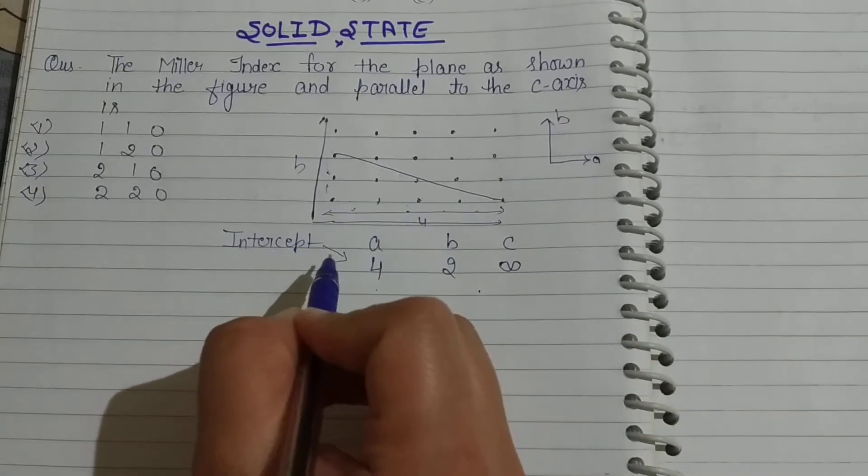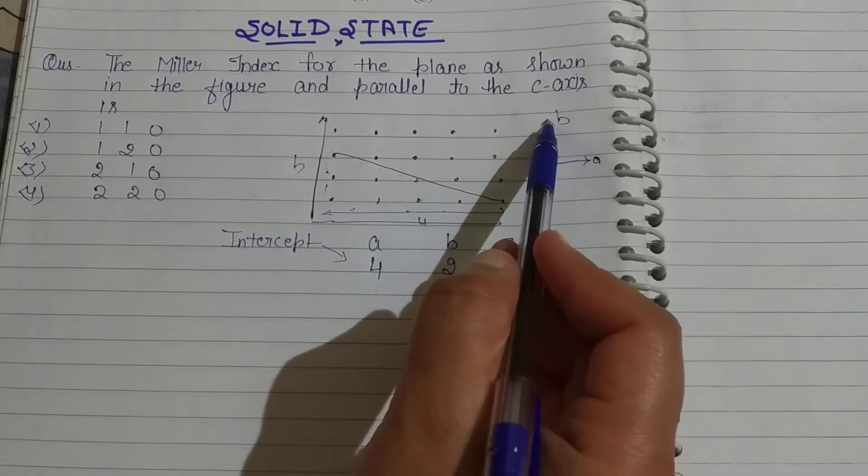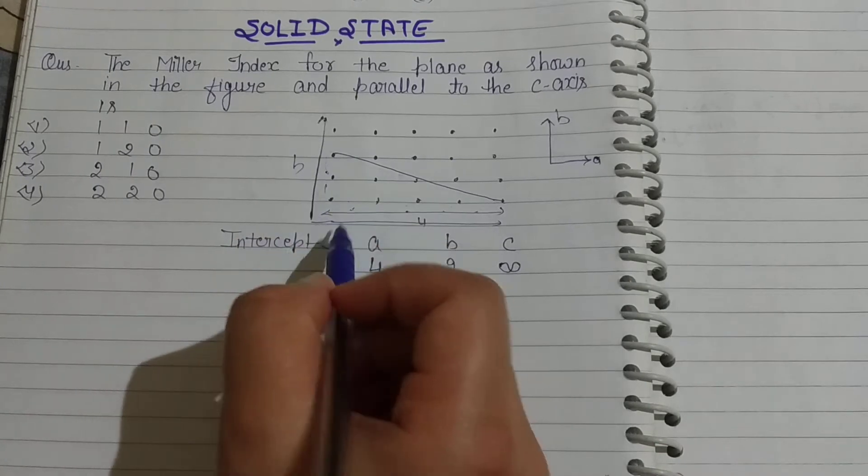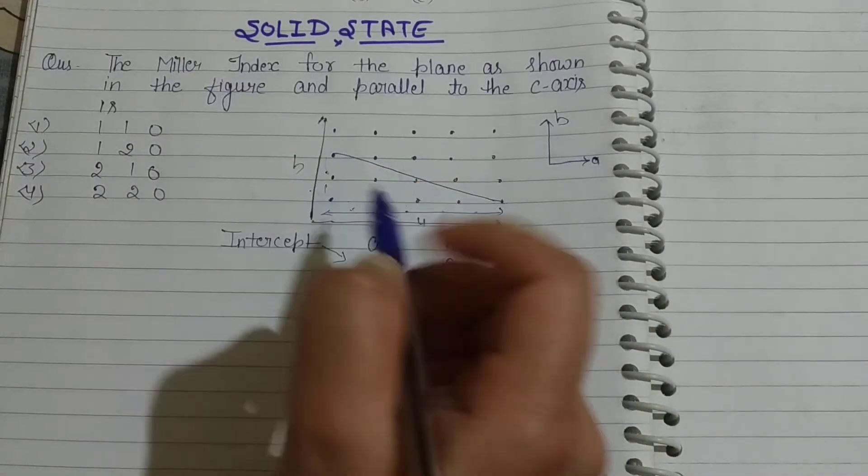So for Miller Indices, what is the first step? We have to find the intercepts. What are the axes? It is the A axis and B axis.